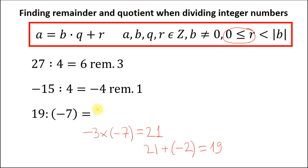So here in this example the quotient must be equal to minus 2. Minus 2 times minus 7 equals 14. Now we should add 5 to this result to get our initial dividend of 19. So the quotient is minus 2 and the remainder is 5. And this condition is satisfied.